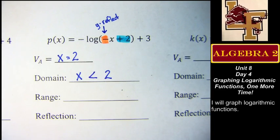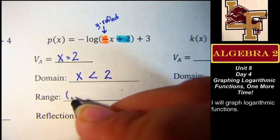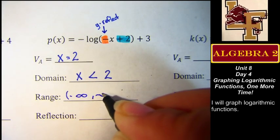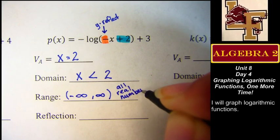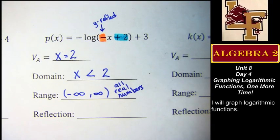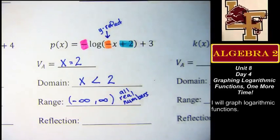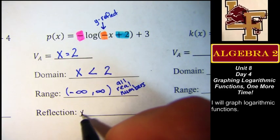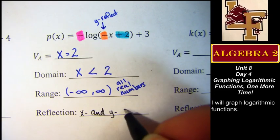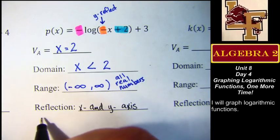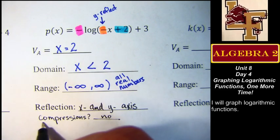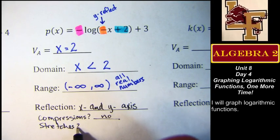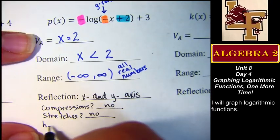What's its range? Yeah, always all real numbers. Does it have a reflection? Across the Y axis. Uh-huh. Does it have any other reflections? And across the X. So reflections happen in the X and in the Y axis. Good. Do we have any compressions? No. Do we have any stretches? No. Good.